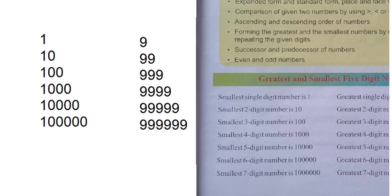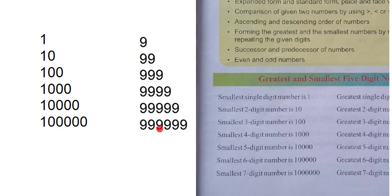Now observe here. I wrote the numbers 1, 10, 100, 1000, 10,000, and 1 lakh. And 9, 99, 999, 9999, 99999. These are single digits. In the single digits, the first number starts from 1. In natural numbers, they start from 1. The one-digit minimum number is 1 and the maximum is 9.